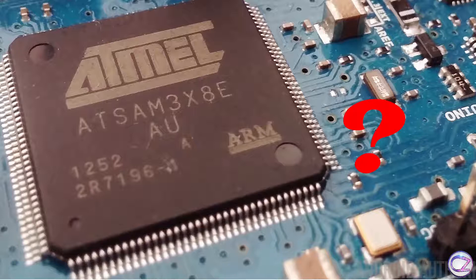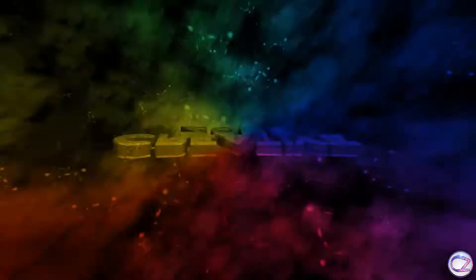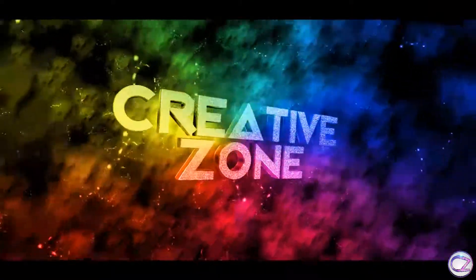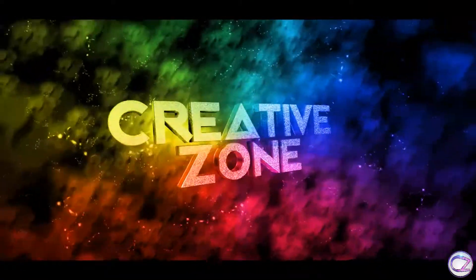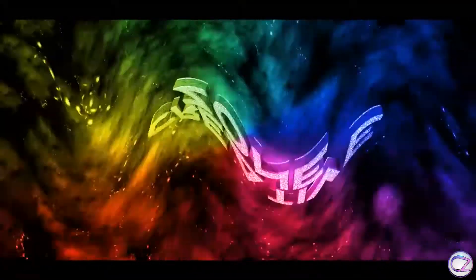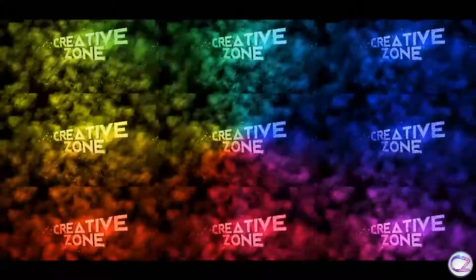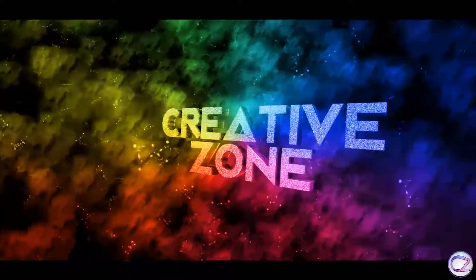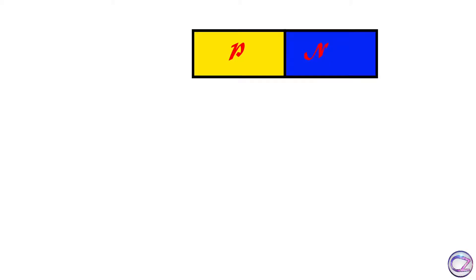But how do they work? Let's see. Actually, transistors are made by P-Type and N-Type semiconductors, like diodes. Look at the P-N Junction Diode.